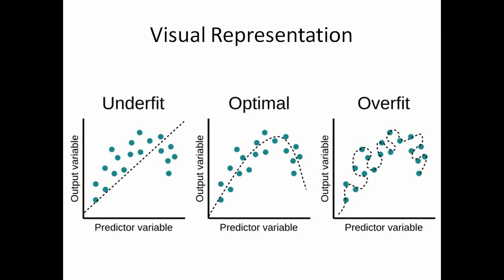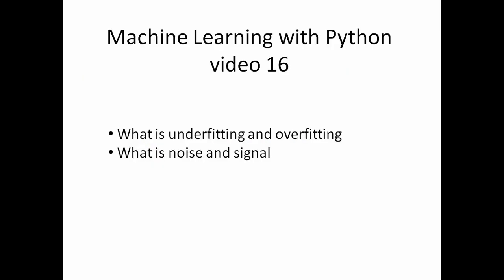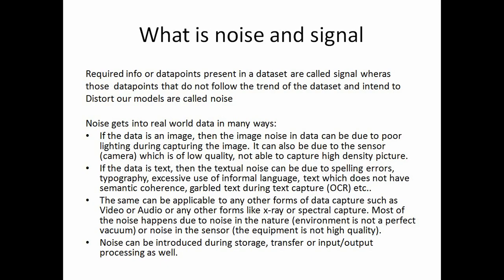So now you can relate bias and variance with overfitting and underfitting. This was a short explanation video of what underfitting and overfitting is. We've also seen what is noise and signal, and the correlation between bias, variance, underfitting, and overfitting. I'm not going to extend this video because these are simple concepts — just an overview, as we are going to see actual examples when we cover our machine learning models. I'll meet you in the next lecture. Bye.